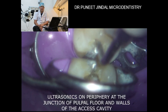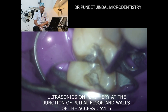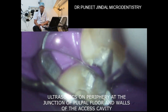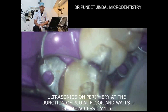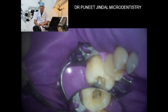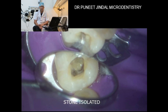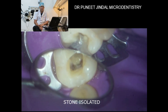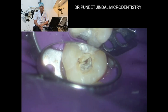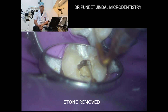Another challenge we faced was that there was a pulp stone. We are using ultrasonics to remove the pulp stone — the ultrasonic device is used at the peripheries of the chamber to isolate the stone. You can see how we have isolated the stone, and now after troughing, the stone has been completely removed.